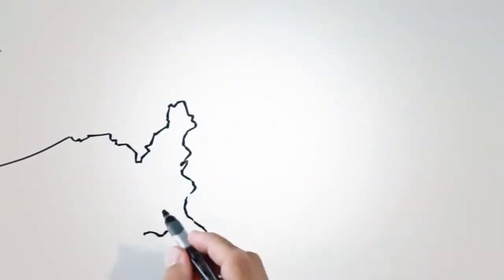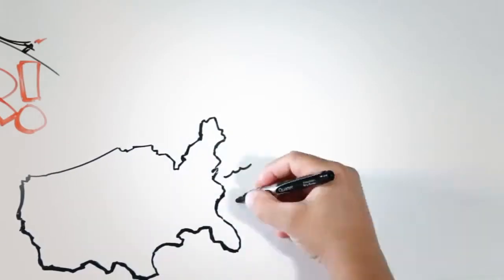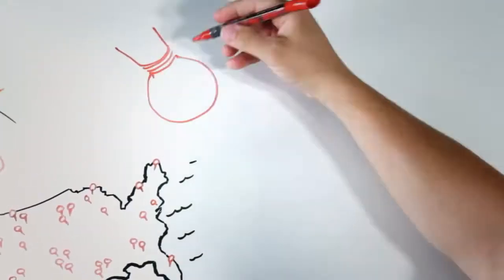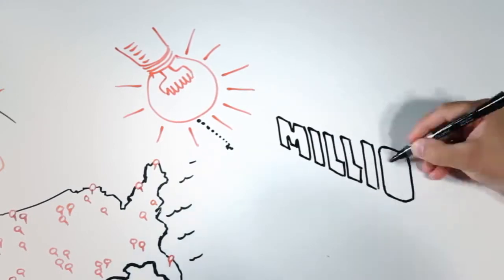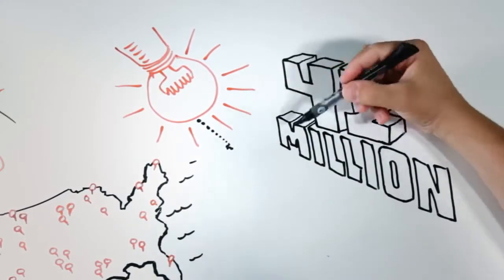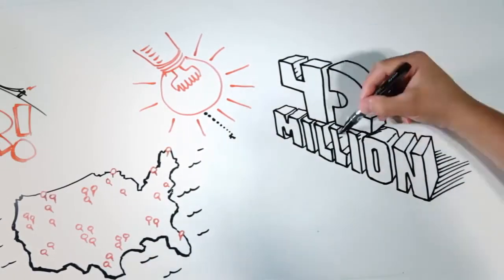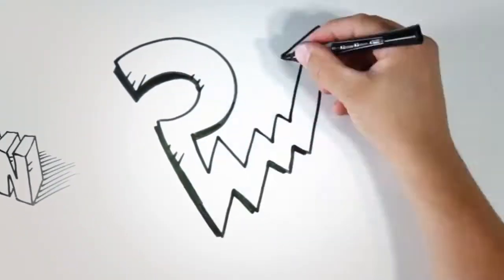Soon electric cooperatives popped up all across the country, transforming the way of life in rural America. Today there are more than 900 electric co-ops in the US, bringing electricity to some 42 million Americans. So how do cooperatives work?